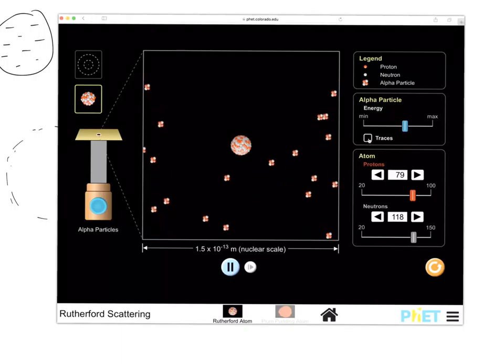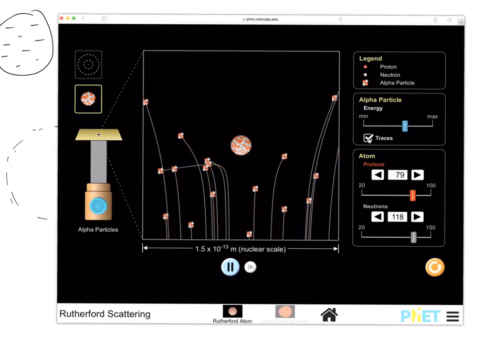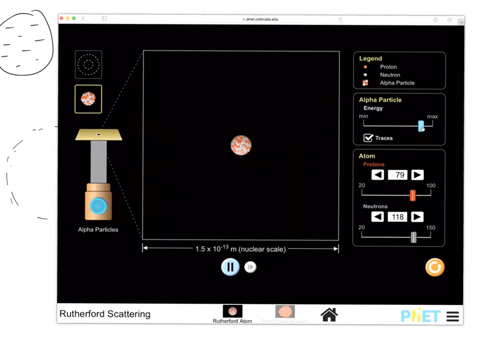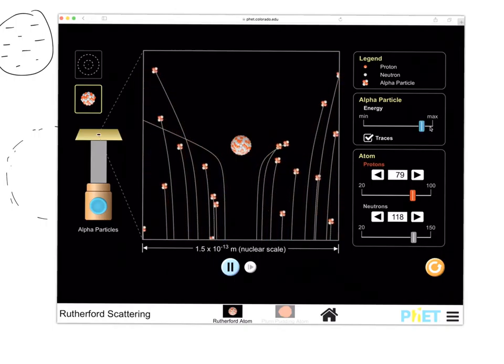And when we press play, you will look at the paths which these alpha particles take. Let's take a look at what we've got. There we go. Now I've placed in the paths, so you can see. And what I'm doing here is I'm turning up the kinetic energy. I'm going to pause that there for a minute.